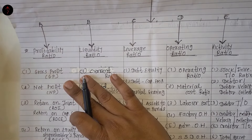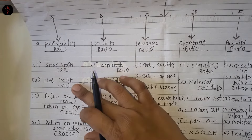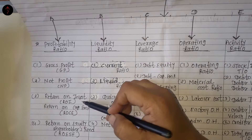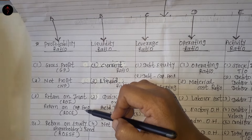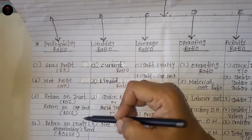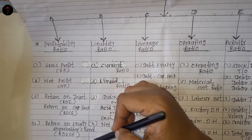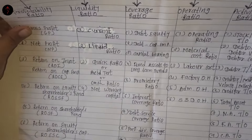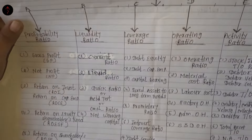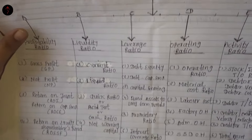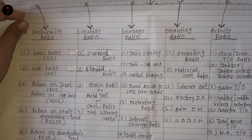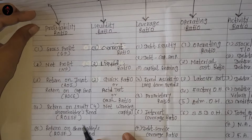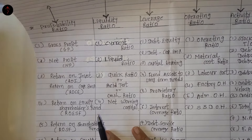Here in Profitability Ratio, the ratios are: gross profit, net profit, return on investment, return on capital employed — return on investment and return on capital employed का meaning same है — return on equity, return on shareholders fund, and return on equity shareholders capital. यह मैंने एक line में इसलिए लिखे हैं ताकि आपको याद रहे कि profitability ratio में कौन-कौन से आएंगे. So profitability ratio में basically we have six ratios.